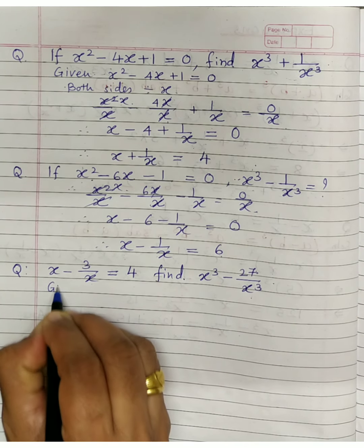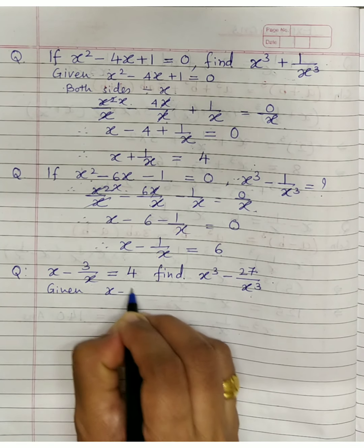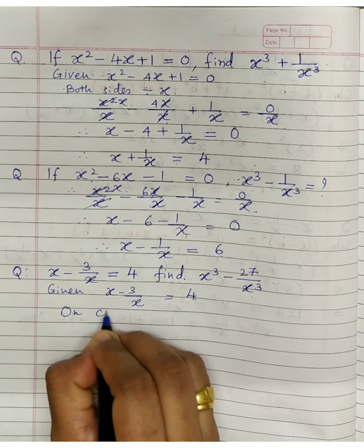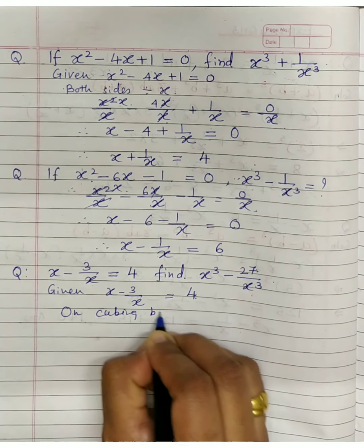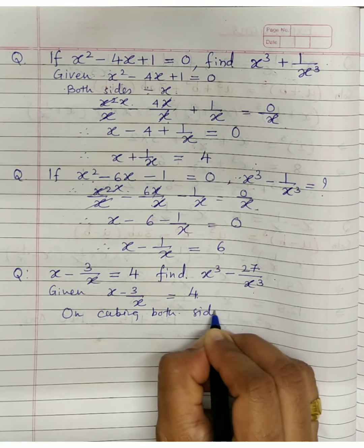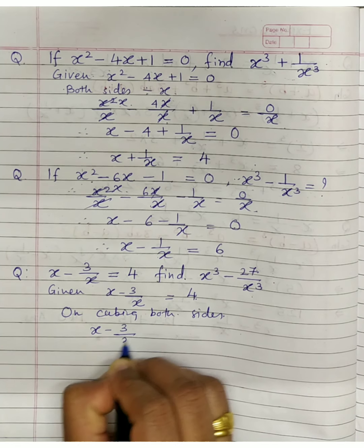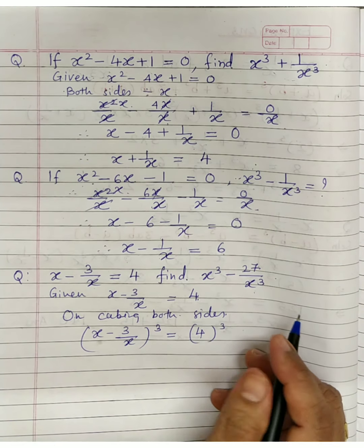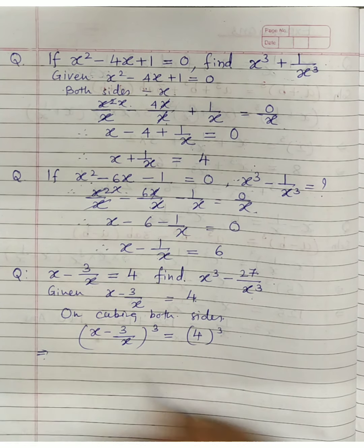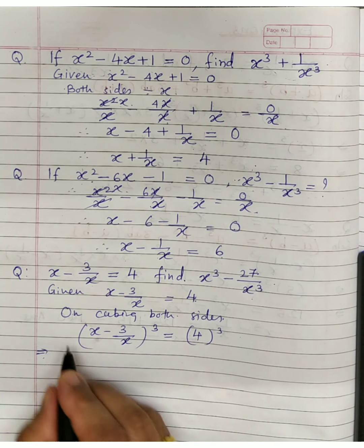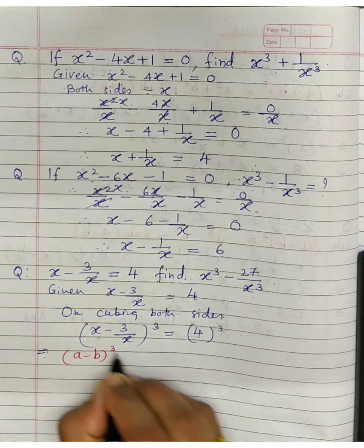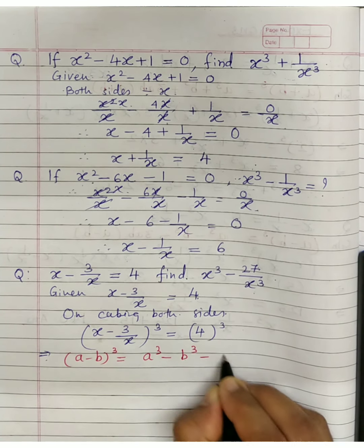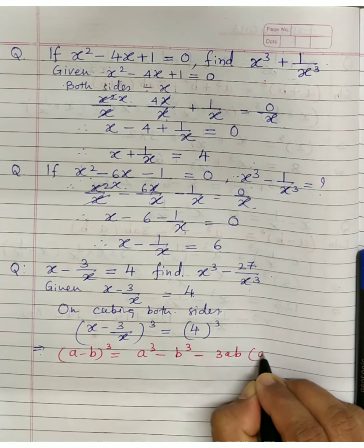Cubing both sides: x minus 3 upon x whole cube equals 4 cube, which is 64. Apply the formula — shortcut form a minus b whole cube equals a cube minus b cube minus 3ab bracket a minus b.